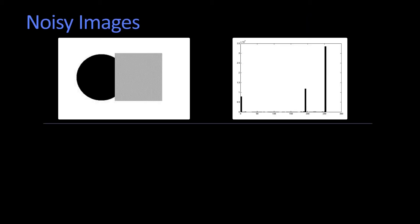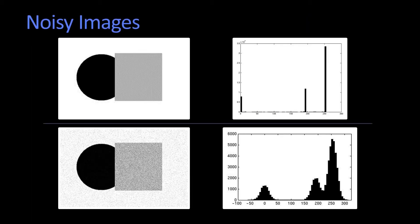But of course, that's on this trivial picture. Here we have that clean image. What if you have a noisier image? Here I've just added a little bit of noise, and now our histogram is not just these straight lines anymore.